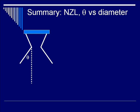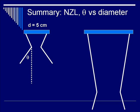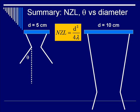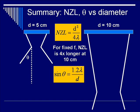Let's look at dependence on transducer diameter. For a given transducer diameter of 5 cm, there is a given NZL and beam divergence angle theta. Increasing D from 5 cm to 10 cm greatly increases NZL while beam divergence decreases. Since NZL is proportional to D squared, doubling the diameter quadruples the NZL — from D equals 5 to 10 cm, NZL increases by 4 times. Beam divergence has only a 1-over-D dependence, so it decreases less dramatically.